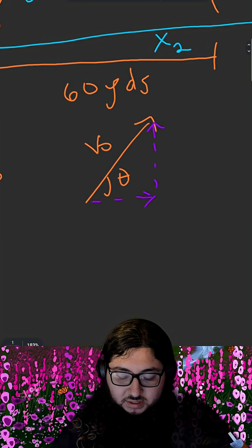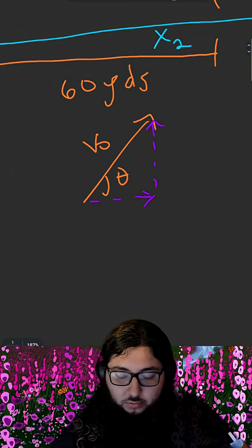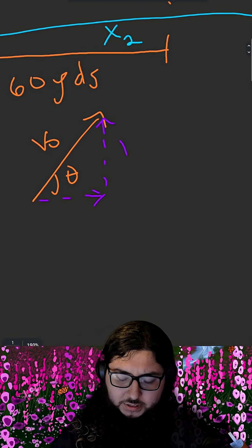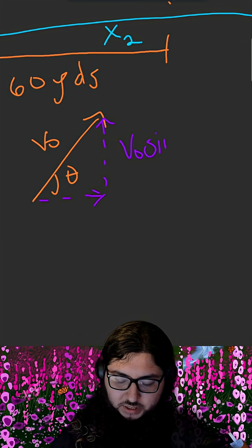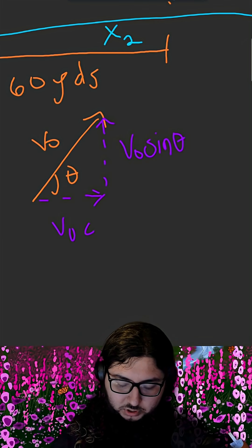Now if we look at our angle right here, this theta will be our 60 degrees, but for now we'll just use variables. If we're breaking it up into x and y components, we'll have v naught sine of theta and v naught cosine of theta.